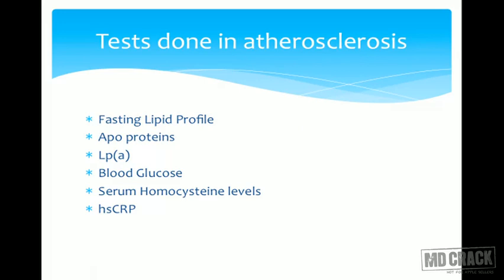Biochemical tests done in atherosclerosis include the fasting lipid profile, which measures serum cholesterol and triacylglycerol. Calculated parameters include LDL cholesterol — calculated using Friedewald's formula — HDL cholesterol, and VLDL. We can also directly estimate apoproteins; Apo B100 is present in VLDL, IDL, and LDL, so estimating it gives the full picture of atherogenic lipoproteins.